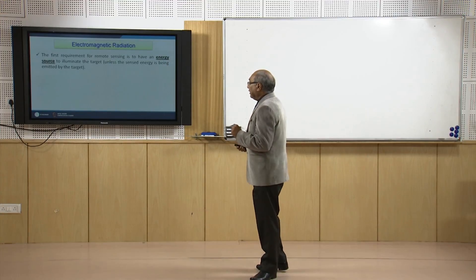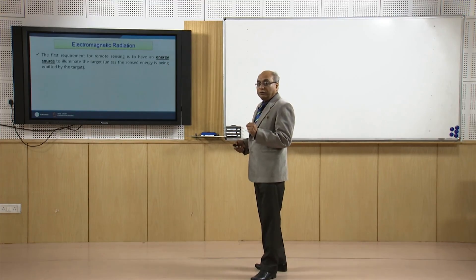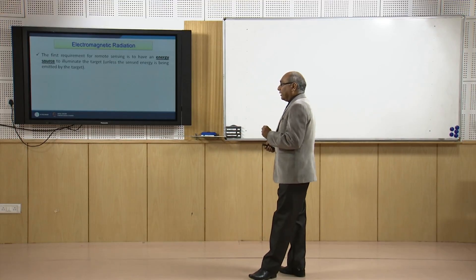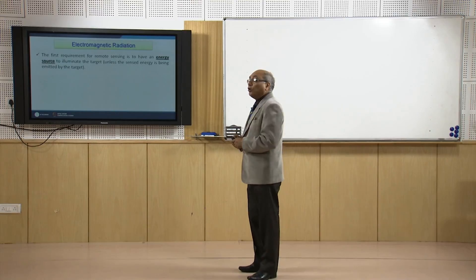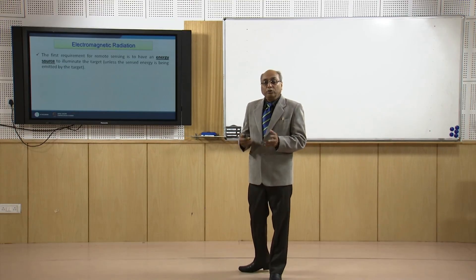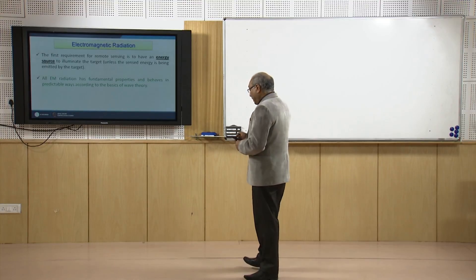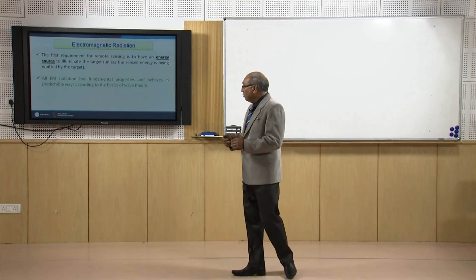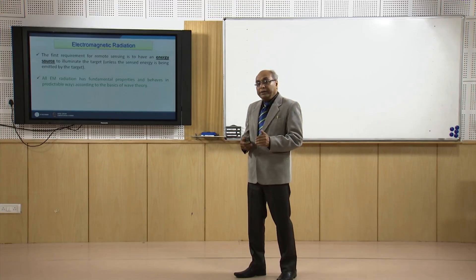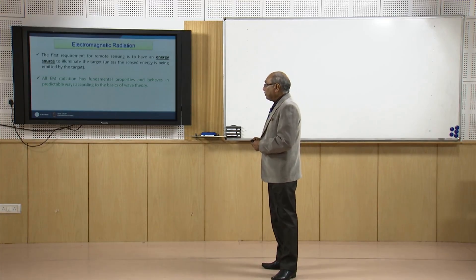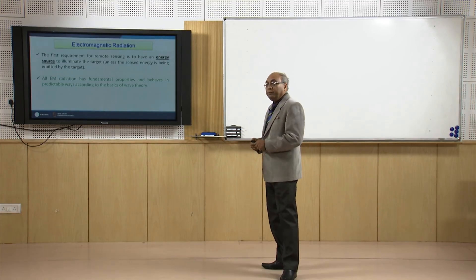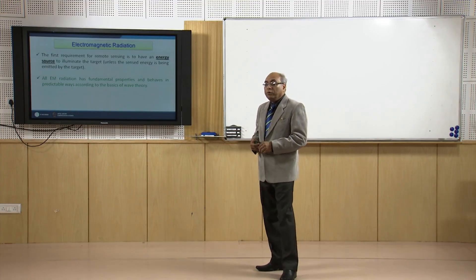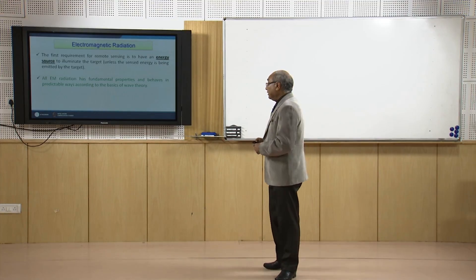One needs to have, in case of remote sensing, some form of energy source to illuminate the target and to get the signatures of any objects present on the earth through these sensors. All electromagnetic radiation has fundamental properties and behaves in predictable ways according to the basics of wave theory. We will be covering different portions of the EM spectrum, especially those which have more direct applications in current remote sensing.